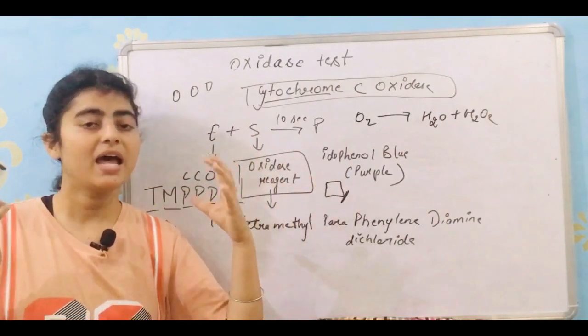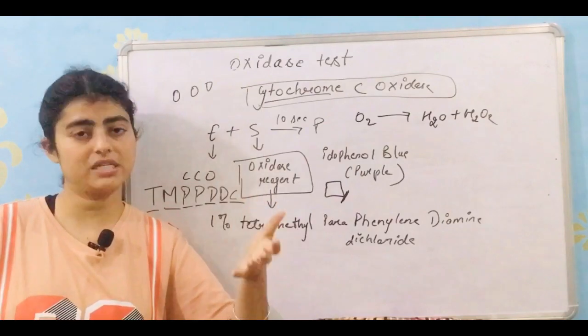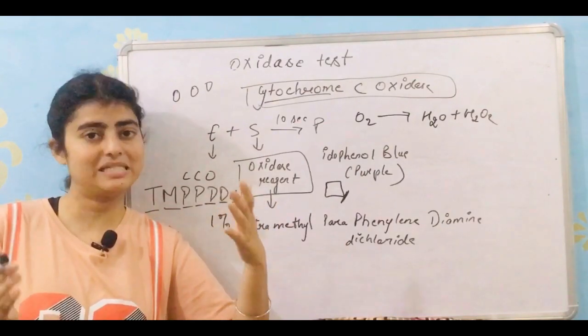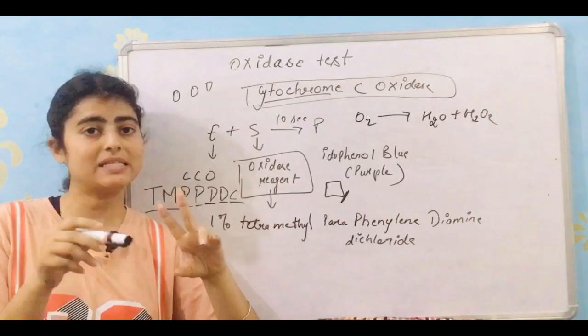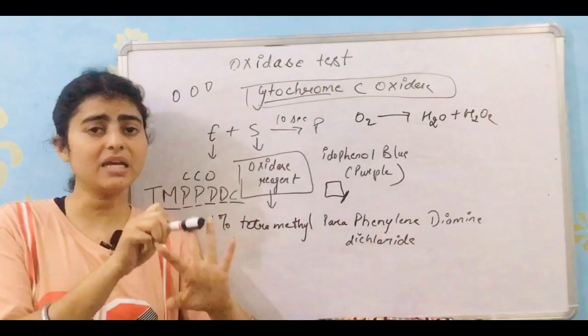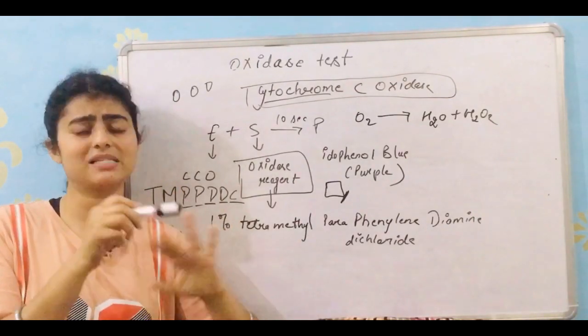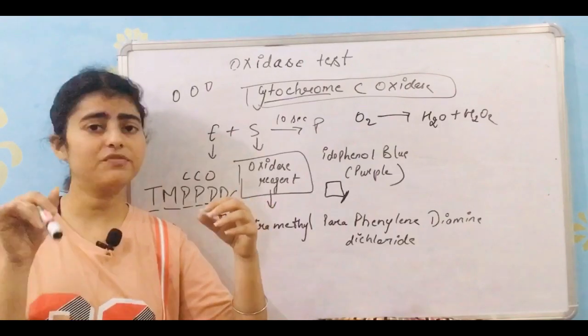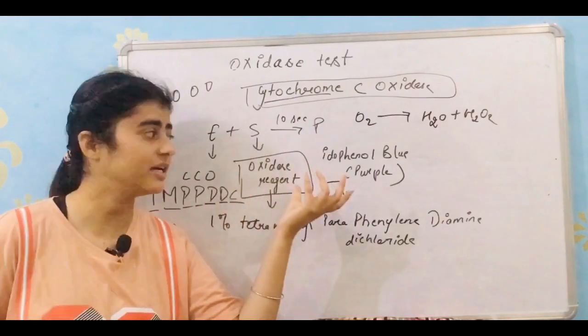And if the colony is oxidase positive, then you can predict easily that it can be either Pseudomonas, Haemophilus, Vibrio, Bacillus, or Neisseria. Like only from five of these it would be anything.